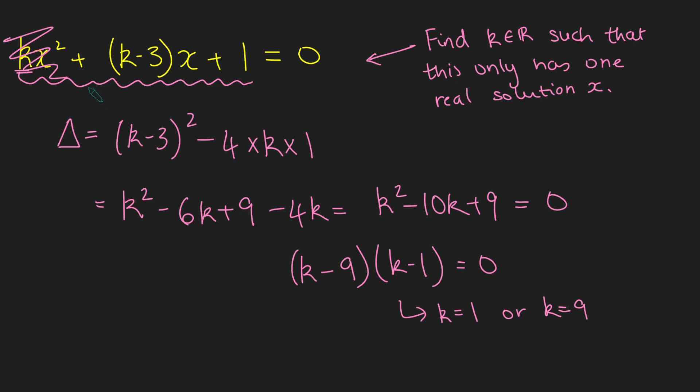So we need to ask ourselves, what about if k = 0? And if k = 0, this just becomes -3x + 1 = 0. And this, of course, has only one real solution, x would be one third.